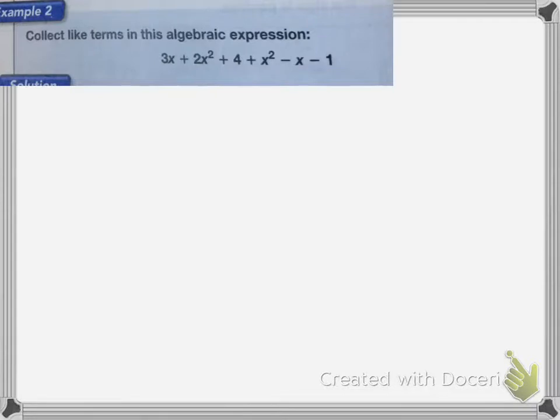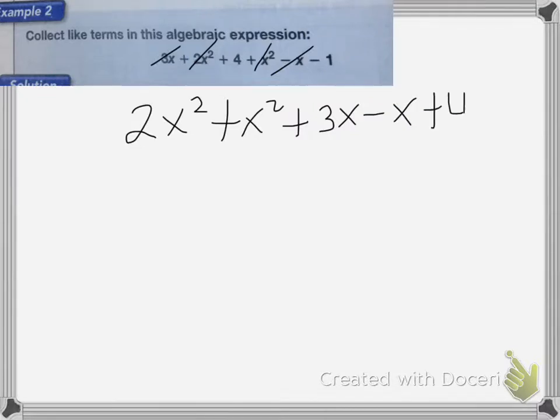First, I'm going to use the commutative property to rearrange these in order. So I have 2x squared plus x squared, I'm going to cross them off so I know I used them, plus 3x minus x plus 4 minus 1.